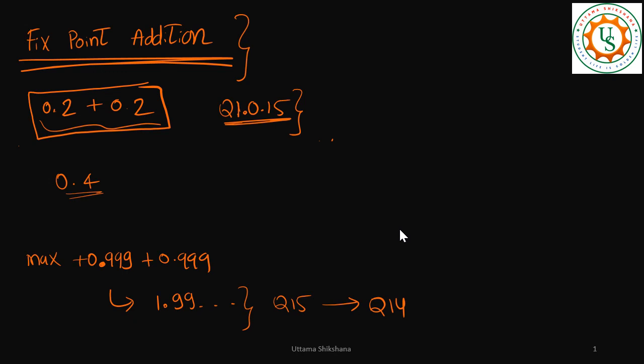Hey guys, welcome back. Till now I was talking about fixed-point multiplication, but in this video we'll talk about fixed-point addition. Let me take an example of addition of two numbers: 0.2 and 0.2, so the result should be 0.4. Going by the range of numbers, I can represent these inputs in Q1.0.15 format.